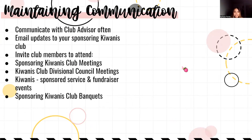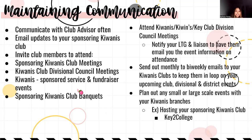For maintaining communication, always communicate with your club advisor often. Send email updates to your sponsoring Kiwanis club and invite members to attend Kiwanis club meetings, DCM-sponsored events, and banquets. Kiwanis is there to help and sponsor you — they want to be in the loop and see you present. Attend their DCMs monthly or join their service projects and fundraisers. Always seek permission before attending. Send out monthly to bi-weekly emails to keep Kiwanis in the loop. A great example of collaboration is the Key to College event that many Circle Ks hold for their Key Clubs.